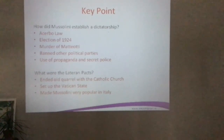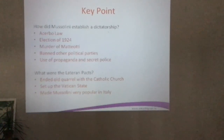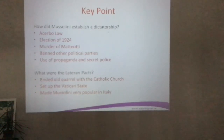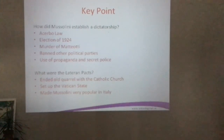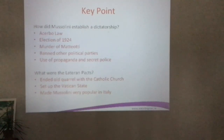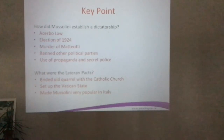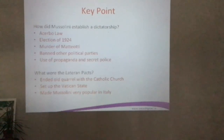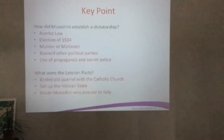Key points summary: how did Mussolini establish a dictatorship — the Acerbo Law, the 1924 election, the murder of Matteotti, banning other political parties, and using propaganda and the secret police. What were the Lateran Pacts — they ended an old quarrel with the Catholic Church and set up the Vatican State. This also raised Mussolini's profile internationally, as Catholic people around the world supported the creation of the Vatican State.